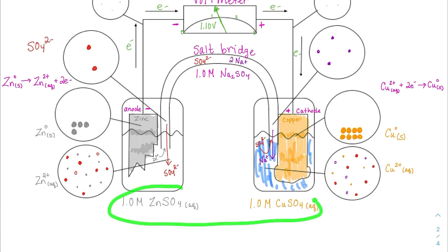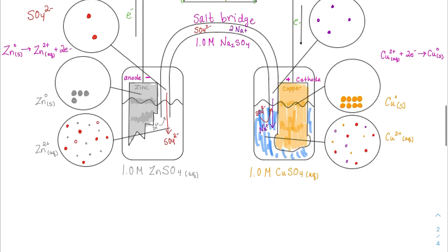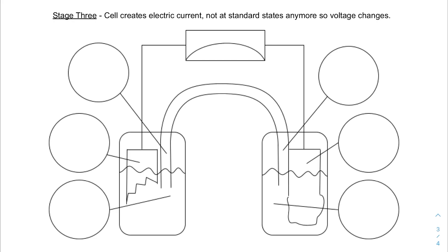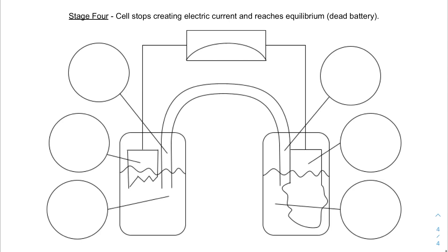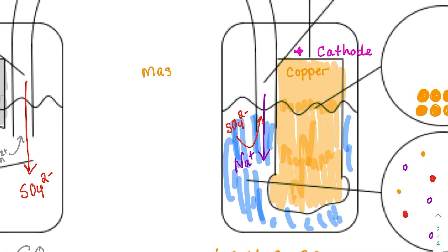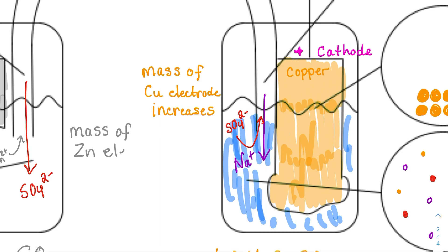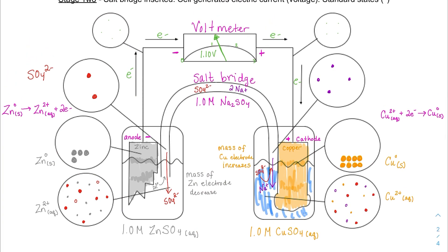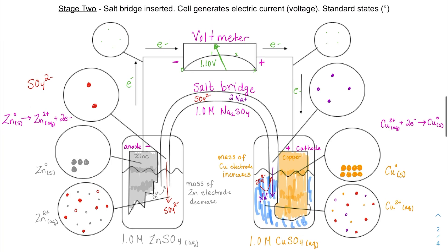One last important point I wanted to make sure we write down: the mass of the copper electrode increases as this cell runs, because copper ions are being reduced and plating onto the electrode. The opposite happens with the zinc electrode — the mass of the zinc electrode decreases as this cell runs, because zinc solid is being oxidized into zinc ions that go into solution.